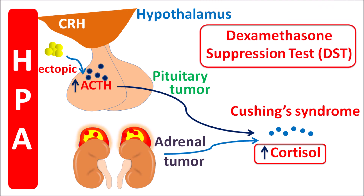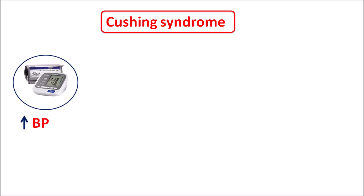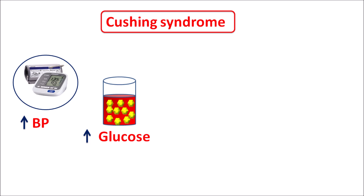The dexamethasone suppression test can be used to identify Cushing syndrome that is mainly due to pituitary tumors. This test can identify whether elevated levels of cortisol are due to a pituitary tumor or any other reason. Cushing syndrome is a condition associated with elevated cortisol, and symptoms include increased blood pressure due to increased contraction of the heart and blood vessels, and elevated glucose levels resulting in hyperglycemia.